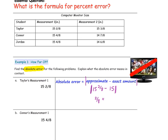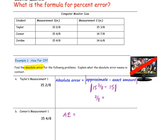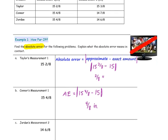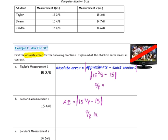Connor's measurement was 15 and 4-eighths. The absolute error is the absolute value of 15 and 4-eighths minus 15, which gives a difference of 4-eighths inch. For Jordan's second measurement of 14 and 6-eighths, the absolute error is the absolute value of 14 and 6-eighths minus 15. That gives a negative number, but since we take the absolute value, the result is 2-eighths, or 1-fourth.